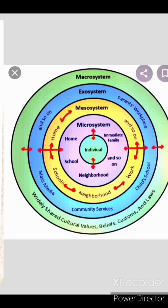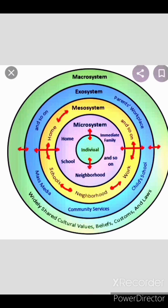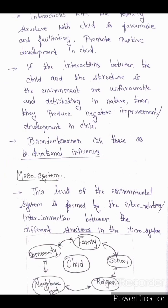The next level is the Mesosystem. The Mesosystem means that it is interconnected — home, school, and neighborhood, which are all part of the Microsystem, are interconnected with each other. This level of the environment system is formed by the interrelation or interconnection between the different structures in the Microsystem. So one structure connects with another structure.